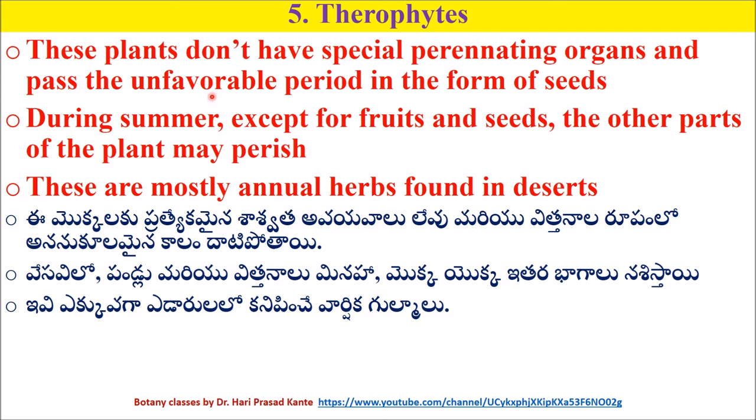During the unfavorable periods — for example during the summer — except for fruits and seeds, the other parts of the plant may perish. These are mostly annual herbs that are found in deserts.